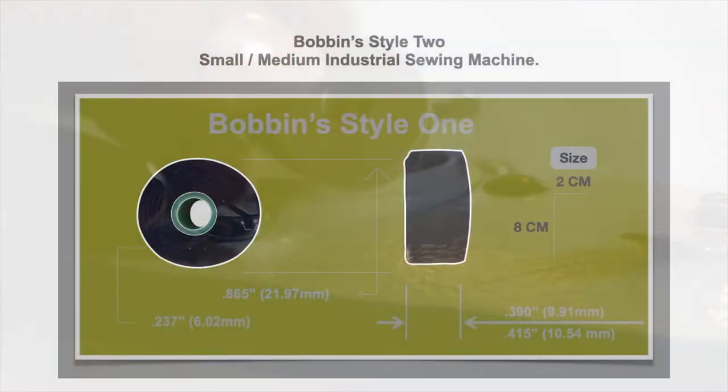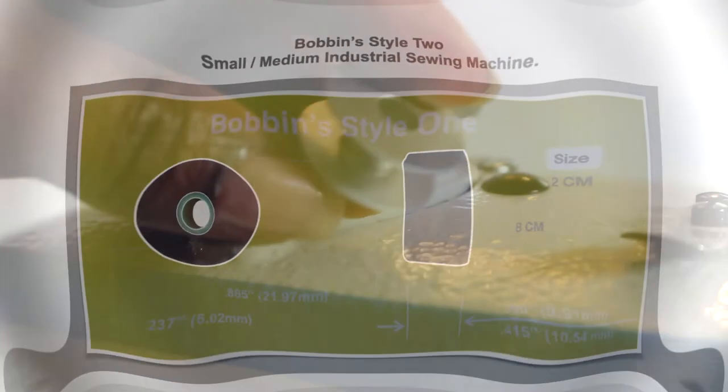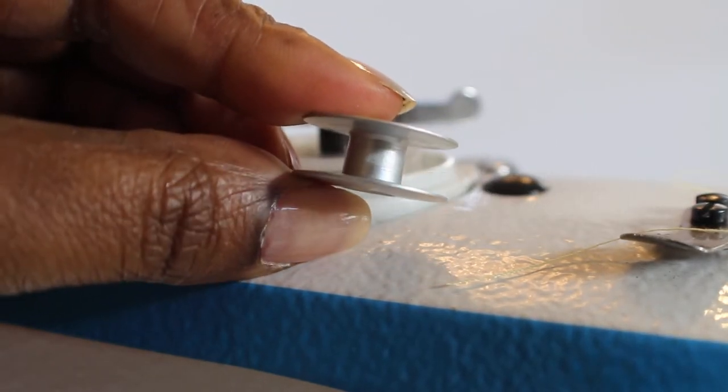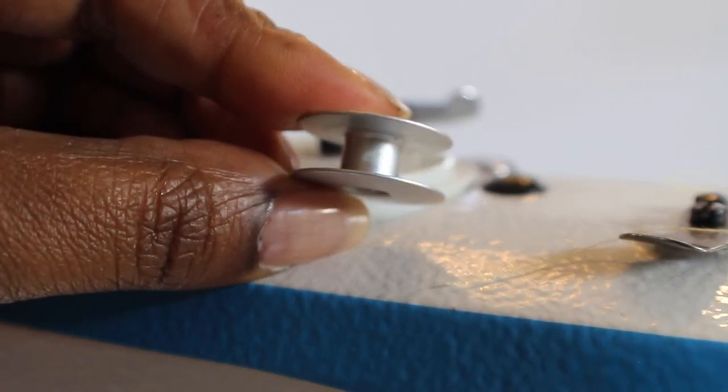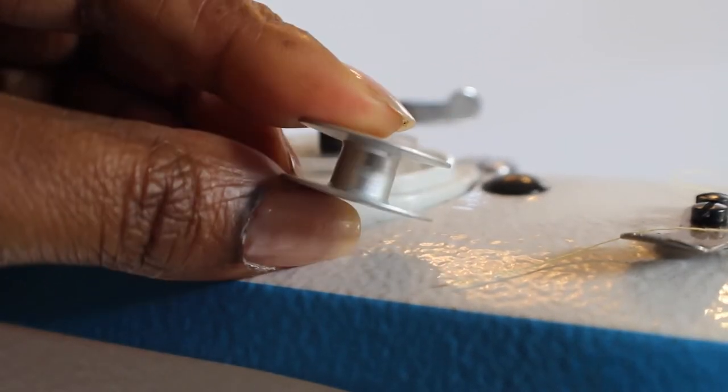The bobbin that I received with the machine, I received three bobbins like this, and these are smaller gauge bobbins. So be very mindful when you're using bobbins, especially if you have a domestic machine. Try and keep all your parts for your industrial machine separate.